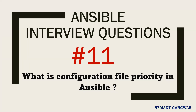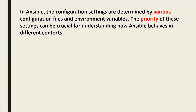Understanding Ansible configuration file priority is crucial for effectively managing your Ansible project and ensuring that the desired configuration is applied as expected. Ansible can have numerous configuration files depending on from where you are executing the binary, and those can be different from the one provided by the default installation. One needs to understand and identify which particular configuration file is effective at the moment to have the desired settings or inventory picked at runtime. We can explore this with the help of an example.